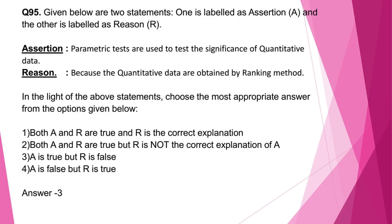Question number 95. Assertion: Parametric tests are used to test the significance of quantitative data — assertion is correct. Reason: because quantitative data are obtained by ranking method — reason is wrong, because ranking methods are more associated with ordinal data, which are qualitative data, not quantitative. Quantitative data are numerical data. So assertion is true but reason is false; the correct answer is option 3.